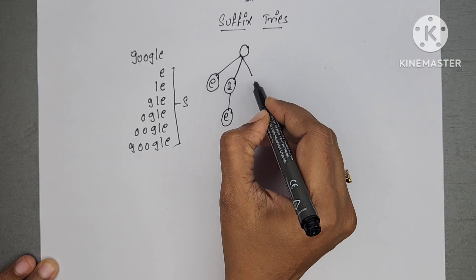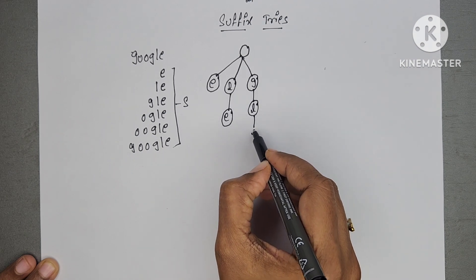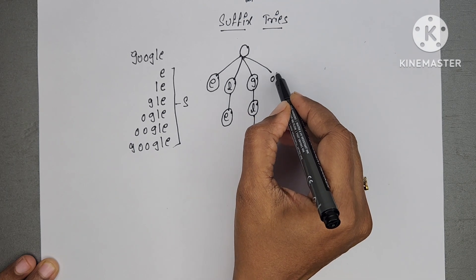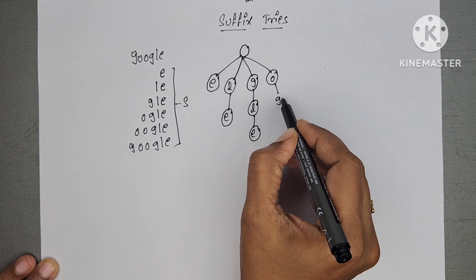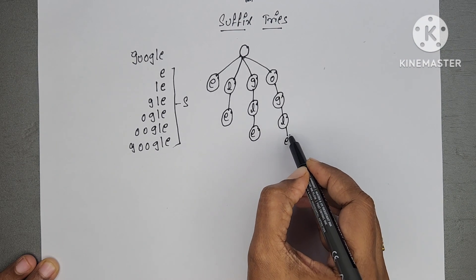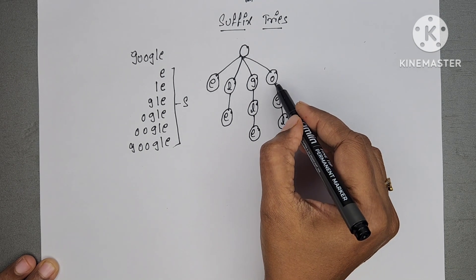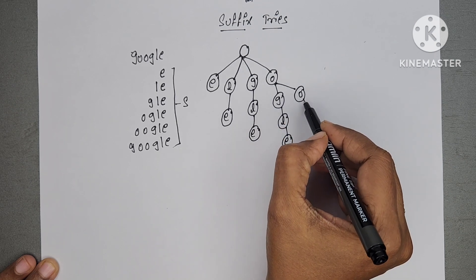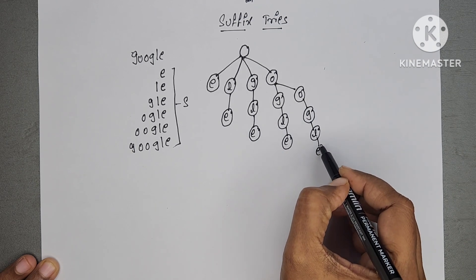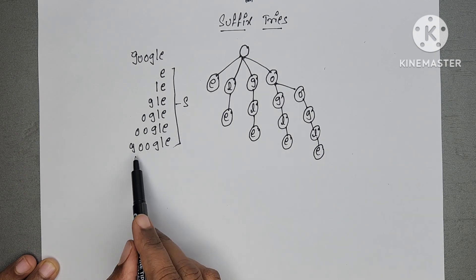Next, GLE. We don't have a node for G, so we have to create G, L, and E. For O also, there is no node for O. We have to create O, G, L, and E. One more is OOGLE. For O, there is already a node — we have assigned O to one node, so we can use the same node. No need to create a node for O again. And one more is GOOGLE — G, OOGLE. For G, there is already a node, so we can use the same node.